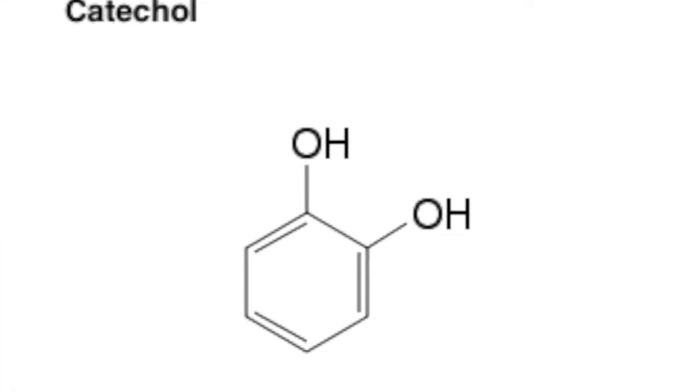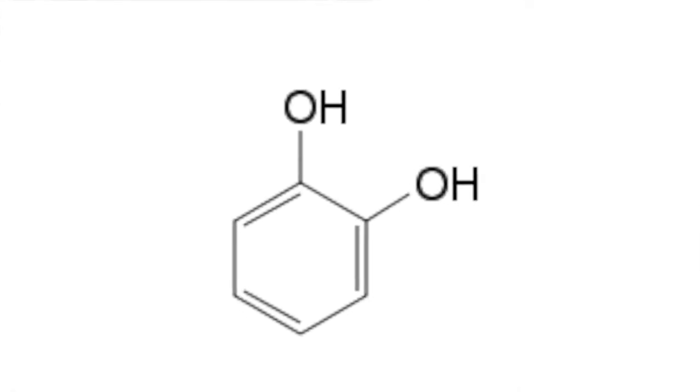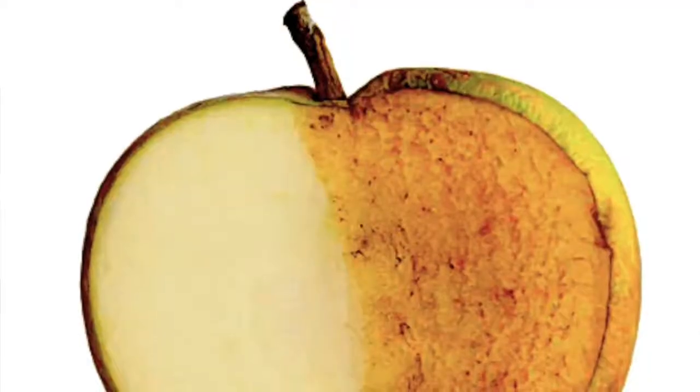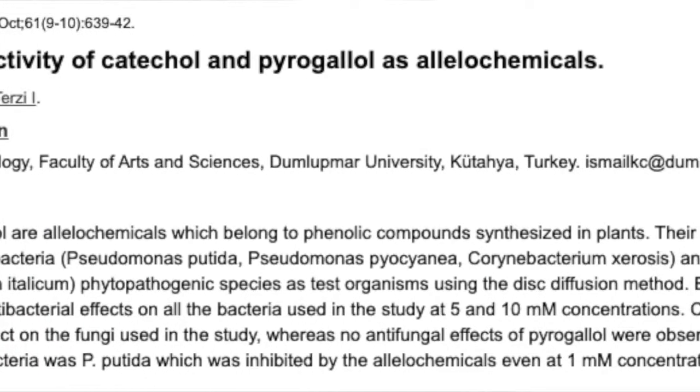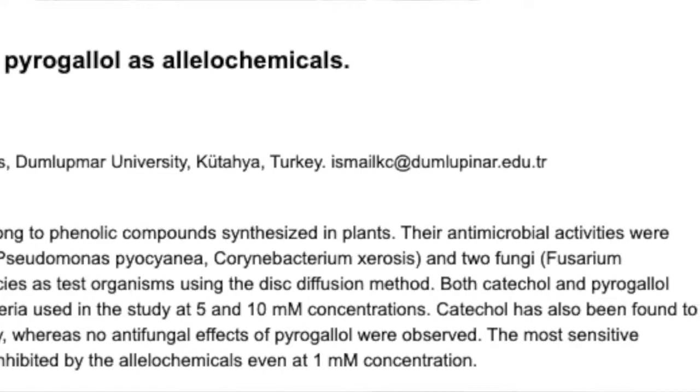The second compound is catechol. Catechol is found in lots of different fruit and it's responsible for the browning effect — for example, in an apple when you cut it open. When you cut an apple open, the fruit has been damaged, and in order to protect itself it releases catechol. That catechol has antimicrobial properties that protect the fruit from any further damage as a result of being exposed.